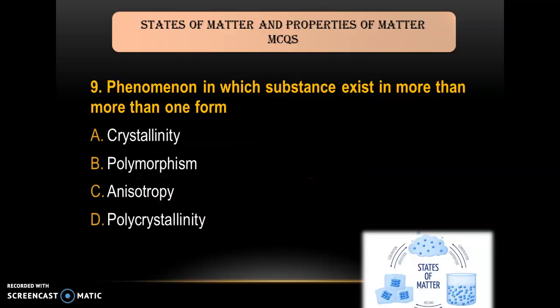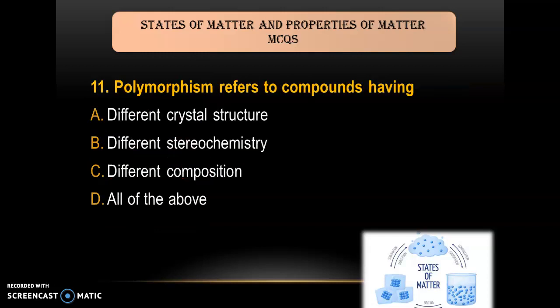Question 9: The phenomenon in which a substance exists in more than one form is — A) crystalline; B) polymorphism; C) anisotropic; D) polycrystallinity. The answer is polymorphism, because in polymorphism a substance exists in more than one form.